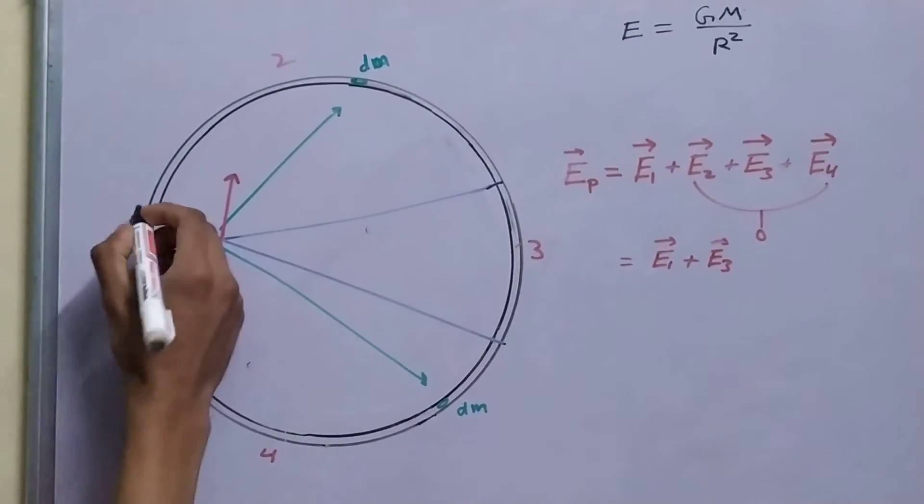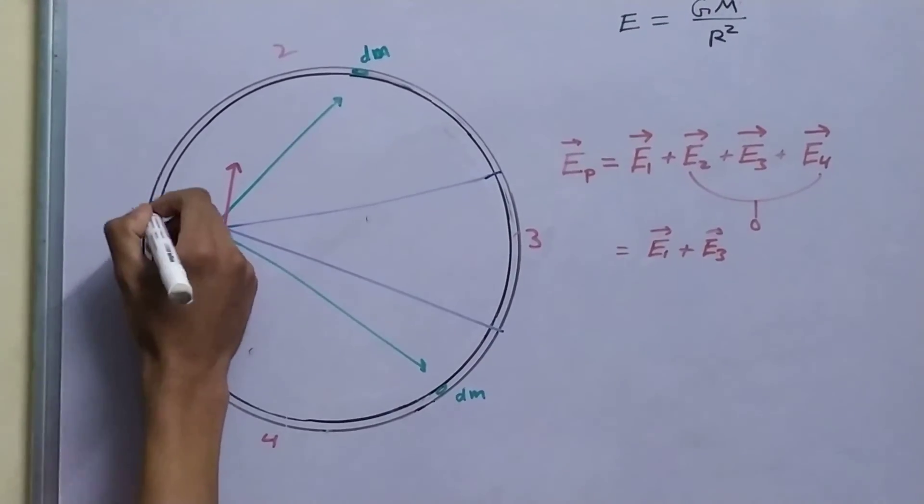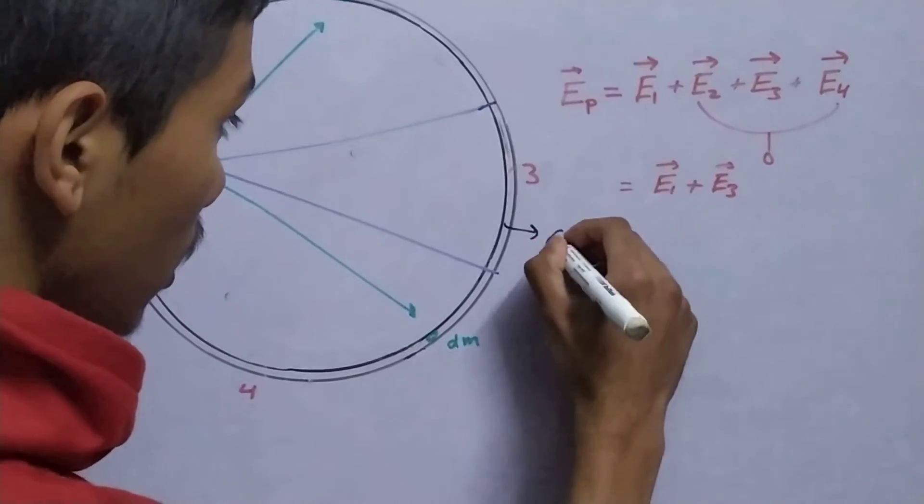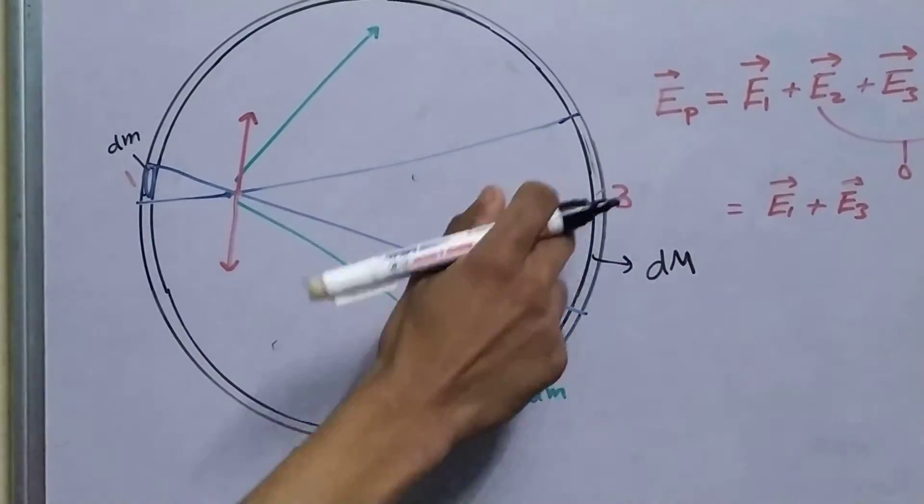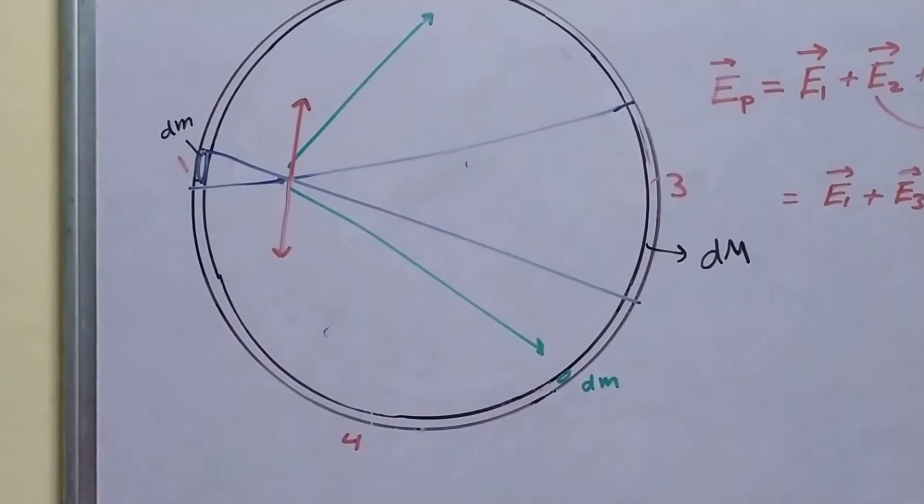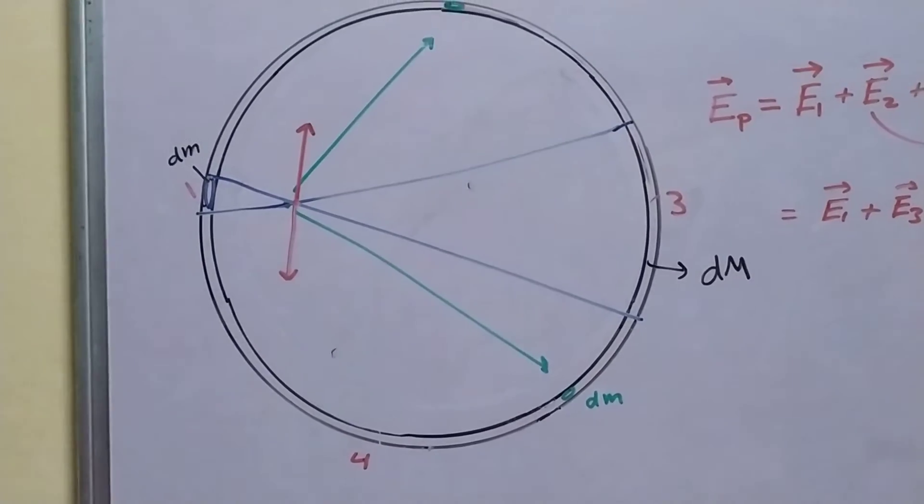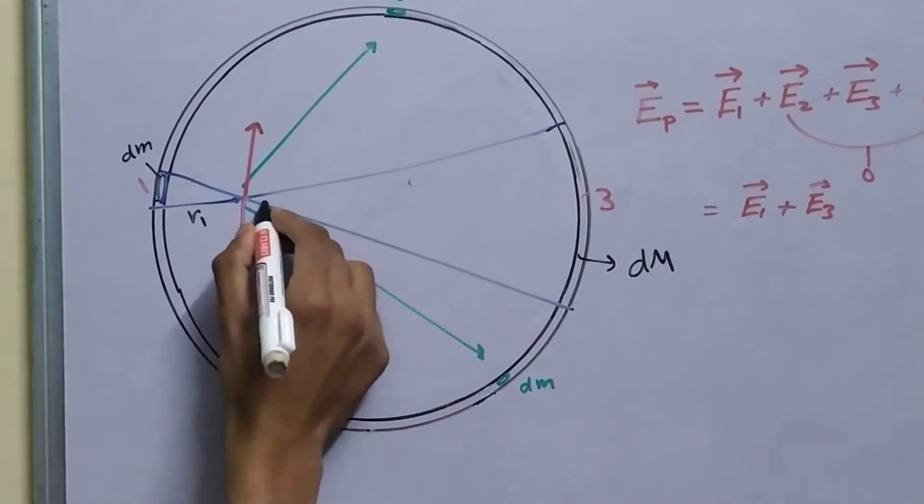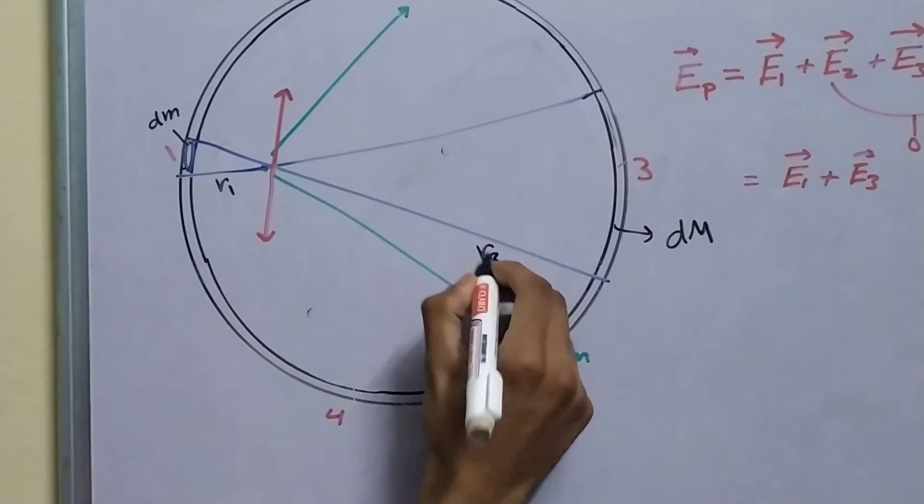Now, let this mass, let me call this dm, let me call this one d capital M, this one is larger than this one. Let me call this distance r1, let me call this distance as r3.